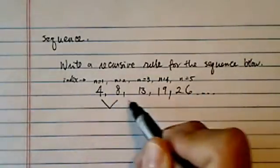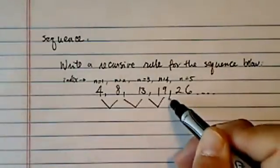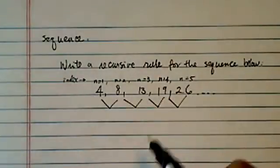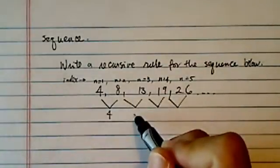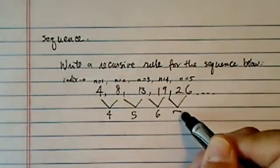Now the first thing you need to know is what order we're looking at. The way you do this, you're going to subtract the terms in between. So here is 4, 5, 6, and 7.